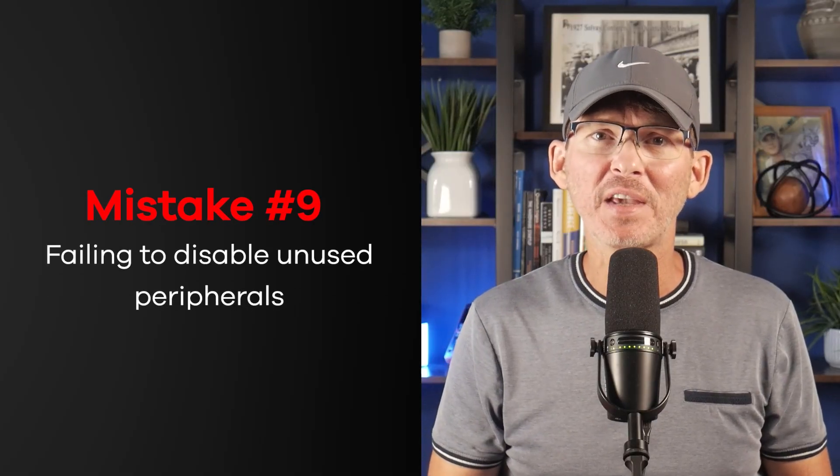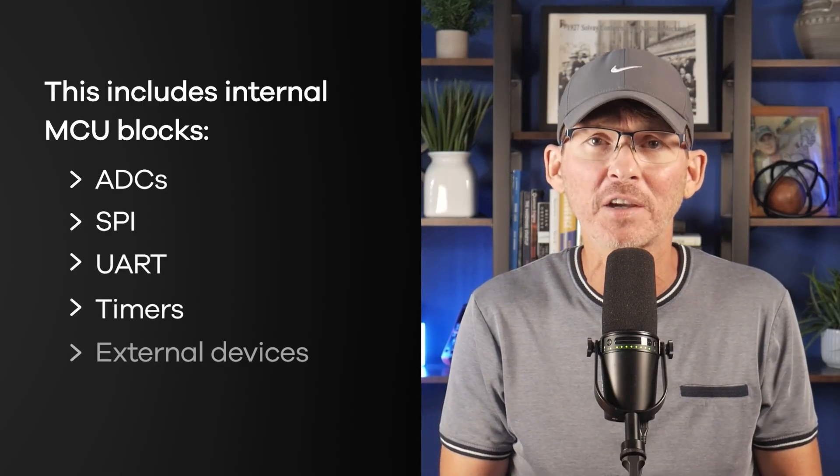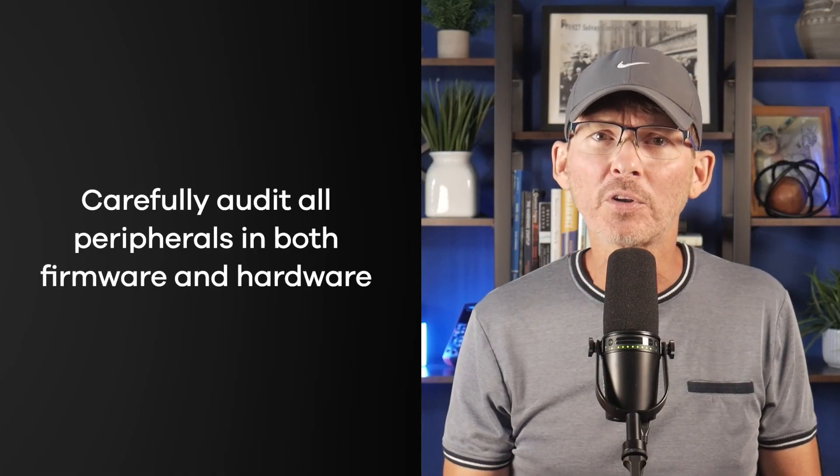Mistake number nine is failing to disable unused peripherals. Leaving peripherals powered when they're not in use is a classic battery killer. That includes internal microcontroller blocks like ADCs, SPI, UART, and timers, as well as external devices. In many microcontrollers, peripherals stay clocked and consuming power unless explicitly disabled. External devices often draw idle current unless you cut their power entirely — including flash memories, sensors, and wireless modules, many of which support enable pins or power gating. Even something as simple as an indicator LED left on constantly can drain a large portion of your battery. Disable anything not essential between wake-ups and always check whether initialization routines are leaving blocks enabled by default.